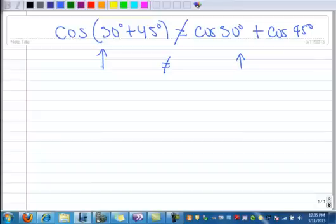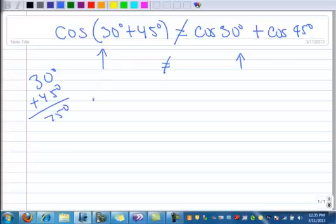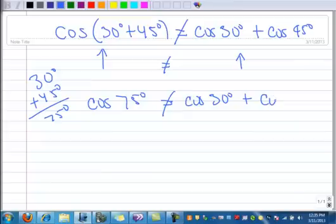So let's just do this with a calculator. 30 plus 45 is 75, so I could rewrite the left-hand side to say the cosine of 75 degrees. That's the same thing. And we're going to show that this is not equal to the cosine of 30 degrees plus the cosine of 45 degrees.